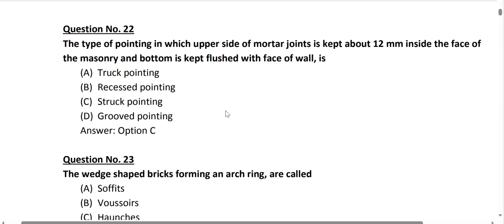Question number 22 is about the type of pointing. Pointing is the joining of two bricks or two masonry units. There are various types: tuck pointing, recess pointing, and groove pointing. The pointing in which the upper side of the mortar joint is kept about 12 mm inside the face of the masonry, and the bottom is kept flushed with the face of the wall, is called stroke pointing. Option C is correct.